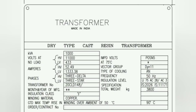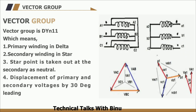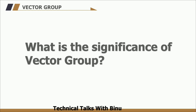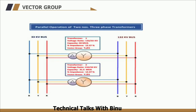Coming back to the nameplate, the next parameter is the vector group, which is Dyn11. 'D' shows delta-connected primary, 'Y' shows star connection in the secondary, 'N' shows that the star point is taken out as neutral, and '11' shows a phase shift of 30 degrees leading between the primary and secondary voltages. The vector group is a method of categorizing HV and LV windings, indicating the winding configuration and phase angle between them. When connecting two transformers in parallel, only transformers with the same vector group should be paralleled — mismatched phase angles will result in circulating currents and system disturbances.